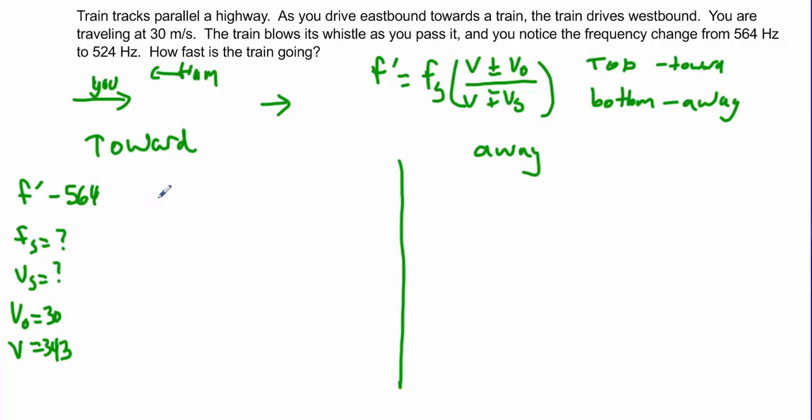So the frequency we hear, 564, is given by the frequency of the source times 343 plus 30 divided by 343 minus the velocity of the source which I don't know. So I have two unknowns, one equation, I'm stuck.